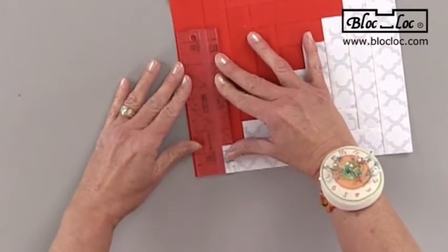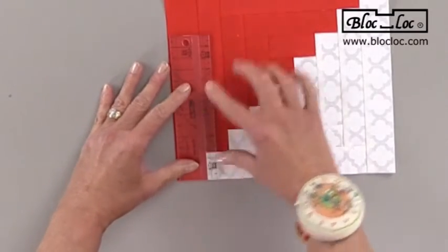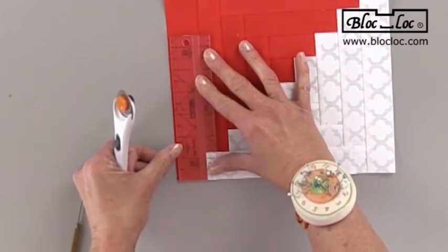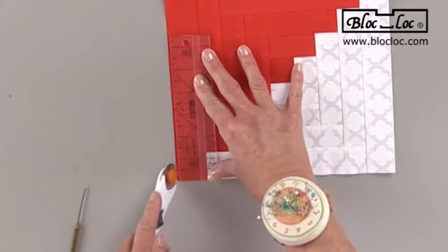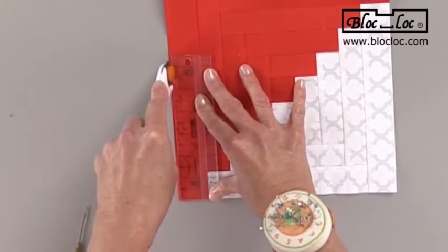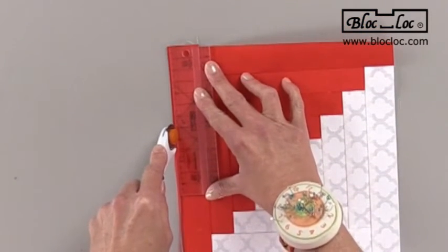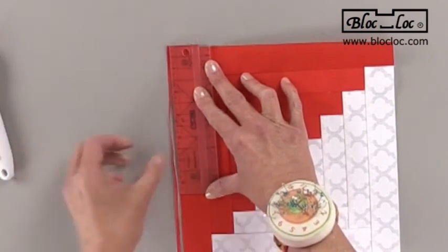I'm going to start trimming. Notice that the block is wider than my ruler and that's perfectly okay. This is the only ruler we make that you can go bigger than the ruler itself. I'm going to cut part of the way, get over that other seam, and then finish trimming.